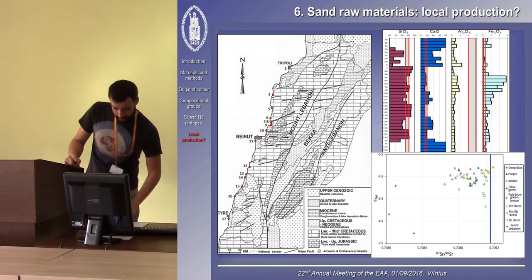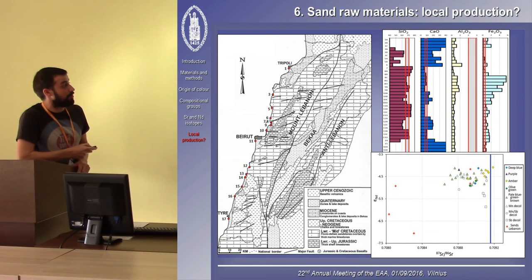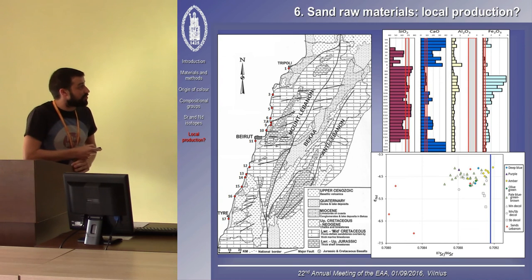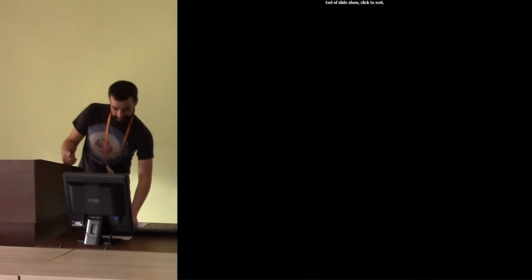We also looked at the strontium and neodymium isotopes in these sands, and it's not very visible, but here we plotted them against our data from the glasses. We only used the signatures from the good glass-making sands. And there's one or two which plot in between our data. So, when we would only have looked at the isotopes, we would have concluded that it is highly likely that the Beirut glass was produced locally. However, the composition of the sands contradicts that. So, our conclusion is, look at all your data before making conclusions. Thank you.